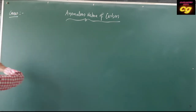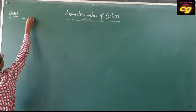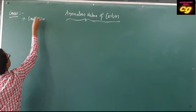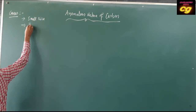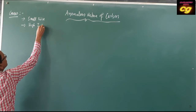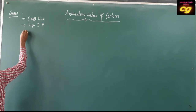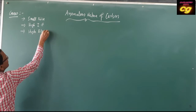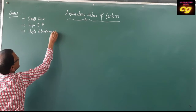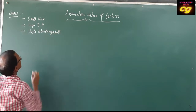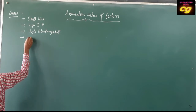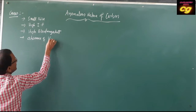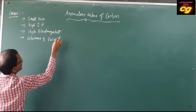The causes of anomalous properties of carbon are: first, small size; second, high ionization energy; third, high electronegativity; and fourth, absence of vacant d orbitals.